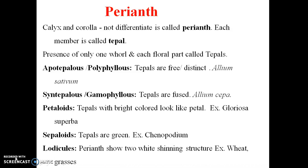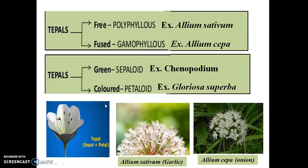Lodicules are white shining structures that represent the perianth in grasses like wheat. In the free form, an example is Allium sativum, and in the fused form it is Allium cepa. The green form, because it is green, is an example of Chenopodiaceae, where the perianth is sepaloid.